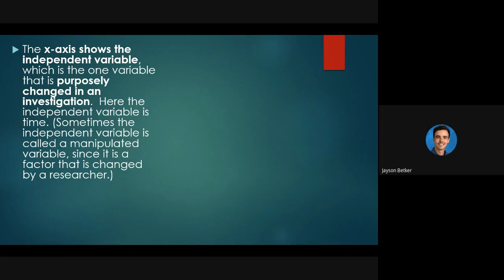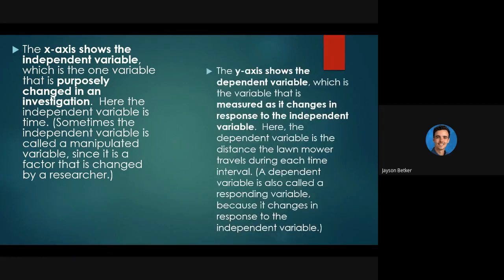Let's say I wanted to know how far you could run in 20 seconds. Then the independent variable on the x-axis is time, because I've controlled it — I decided it was 20 seconds. What changes is how far you've traveled, which depends on how fast you ran, your reaction time, and other variables. That changes the dependent variable, which is the distance you were able to travel — the variable measured as it changes in response to the independent variable.